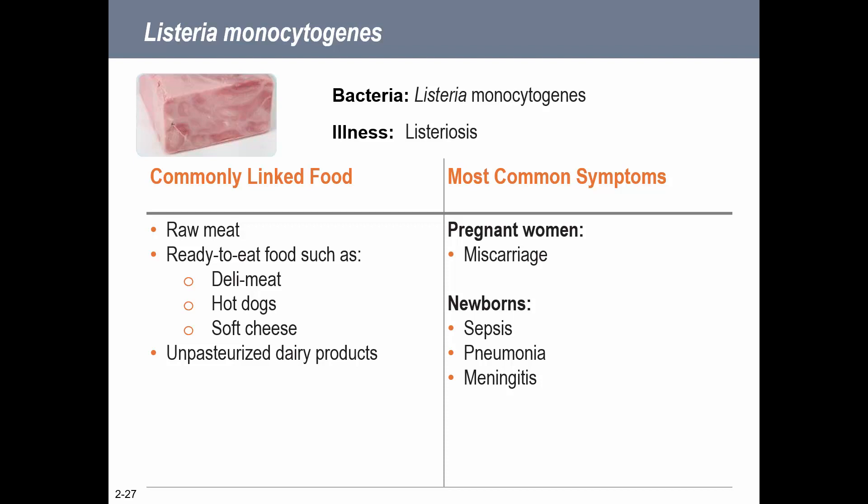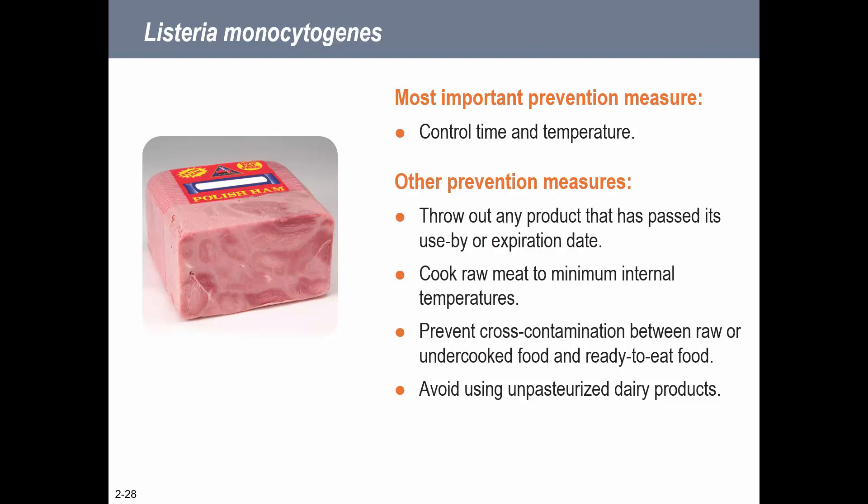Listeria is one we've seen a lot in the news. It's found in ready-to-eat foods like deli meat, hot dogs, soft cheese, and unpasteurized dairy. We're starting to see listeria more in processed foods - there was an outbreak in ice cream and even in cut melon. We are most concerned with listeria in pregnant women and newborns, as it can cause miscarriage. Controlling time and temperature is the most important prevention method.